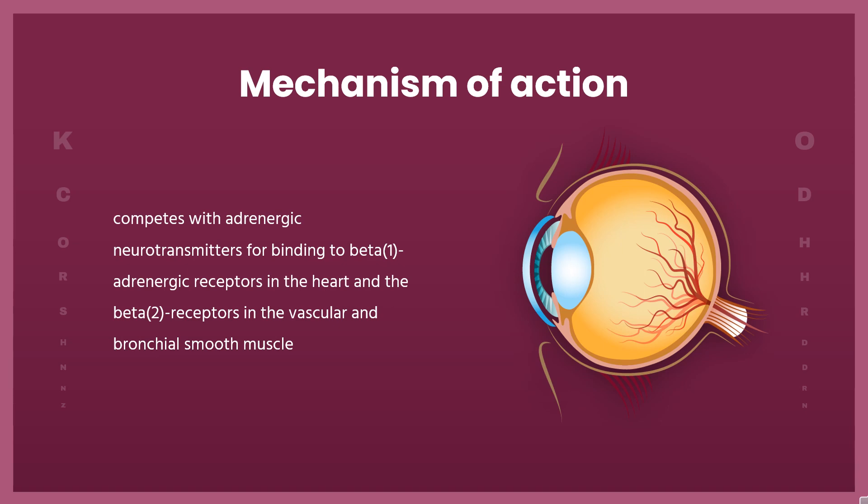Beta-1 receptor blockade by Timolol leads to a decrease in both heart rate and cardiac output during rest and exercise, and a decrease in both systolic and diastolic blood pressure. In addition, a reduction in reflex adrenergic hypotension may also occur.